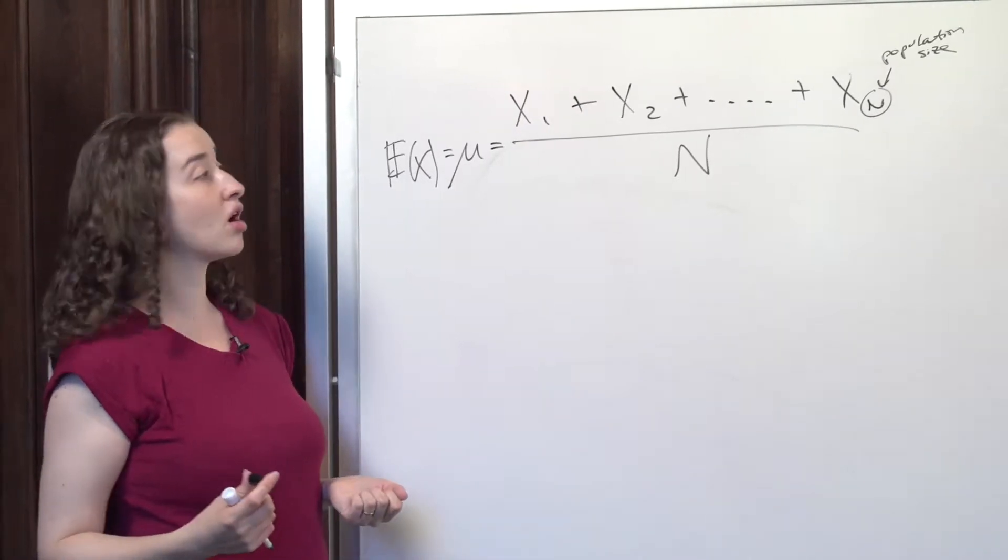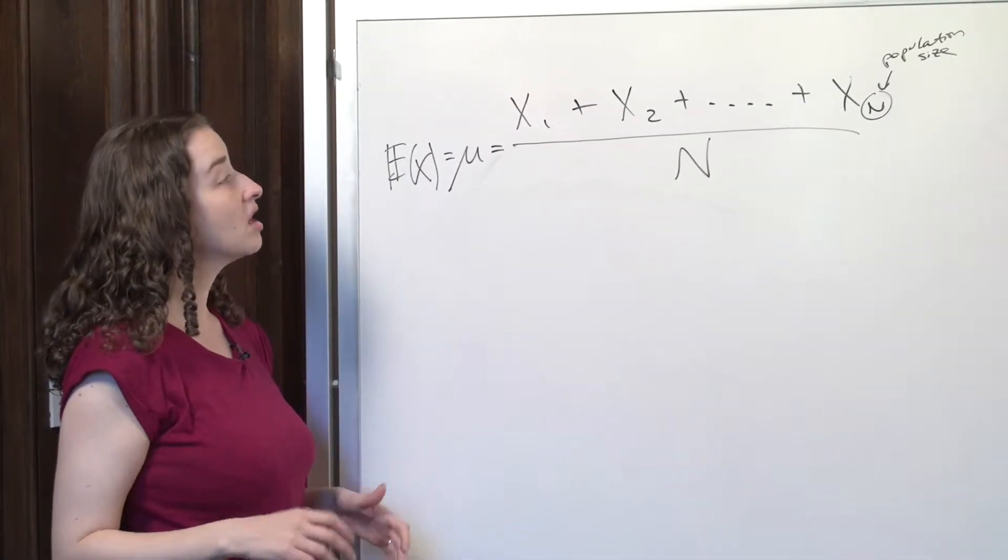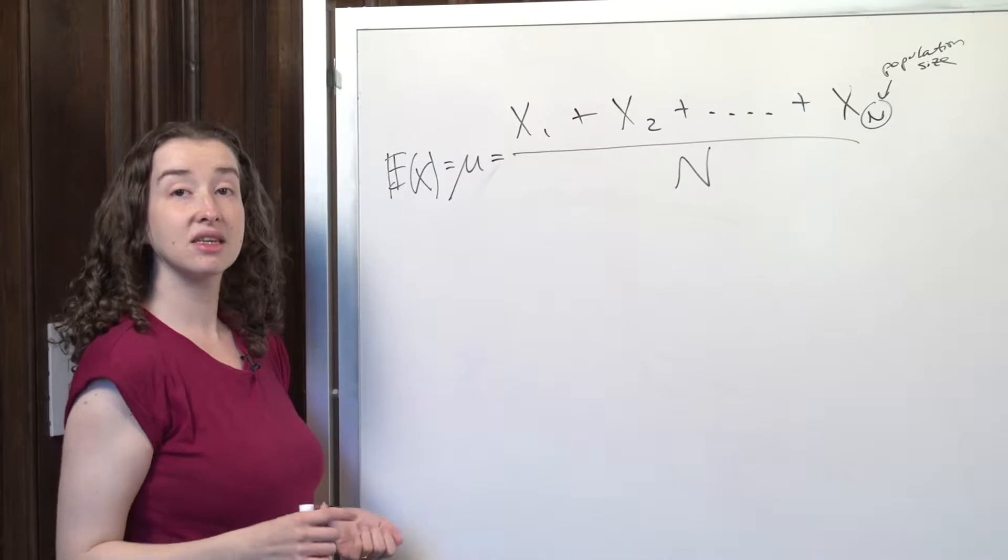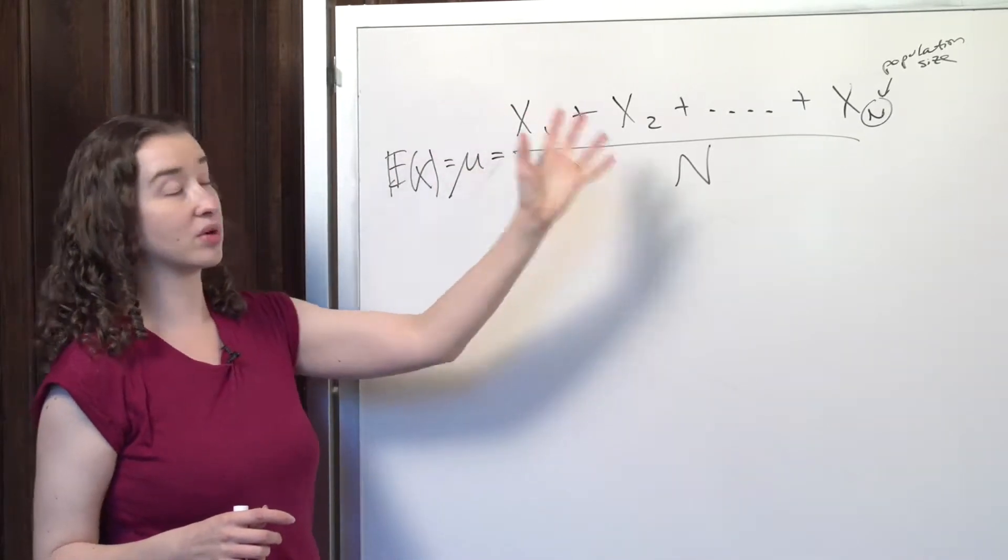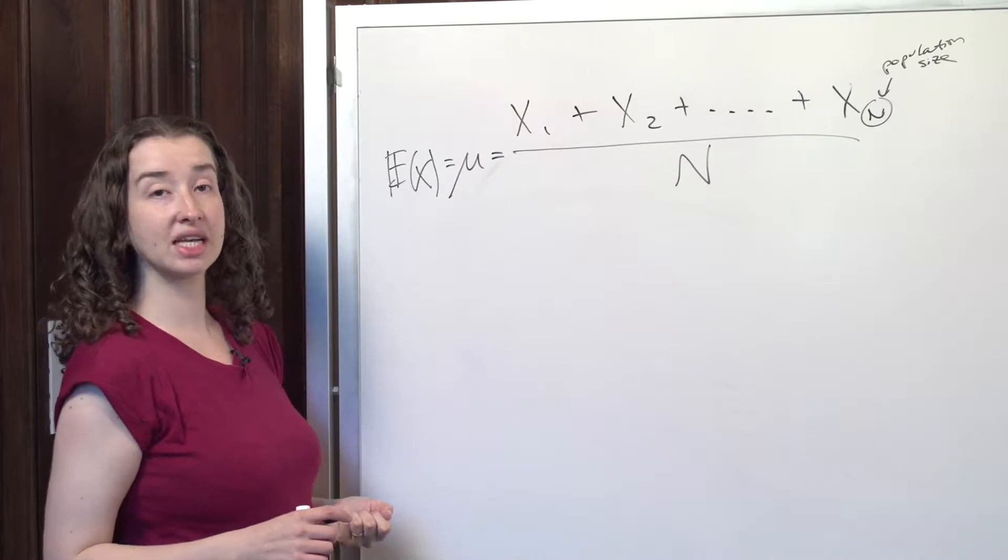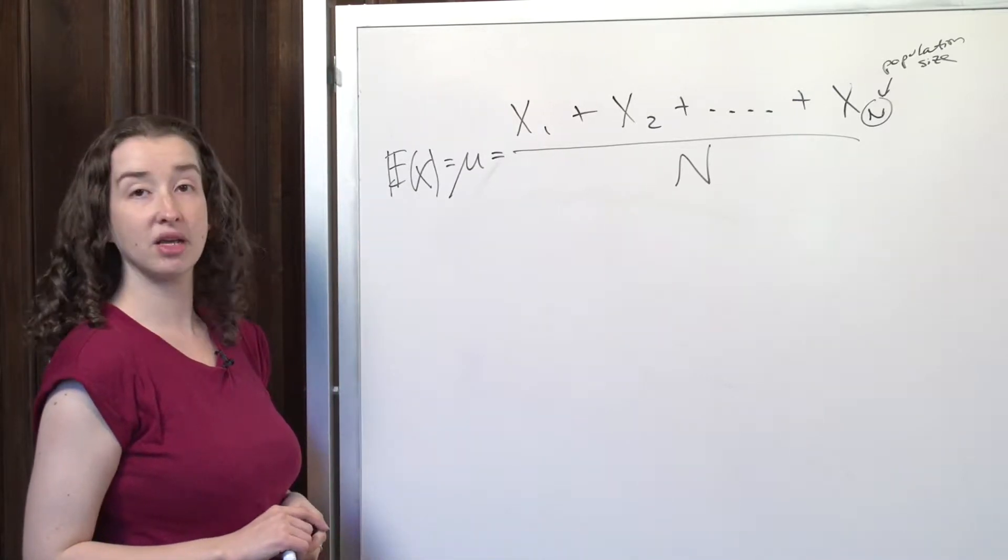If I were to randomly draw one unit from this population, on average, what would I expect the value of X to be? Mu, expectation of X. In other words, the number I get when I add up all these X's and divide by how many there are.